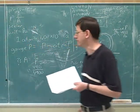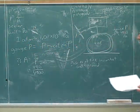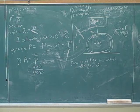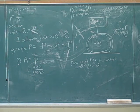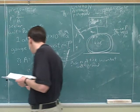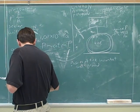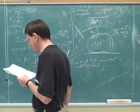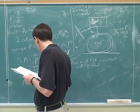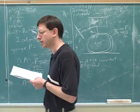We can plug in 4900 Pascals for the gauge pressure and figure out what the area is. The units on the area would be meters squared.